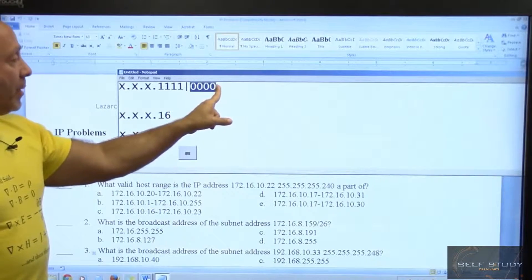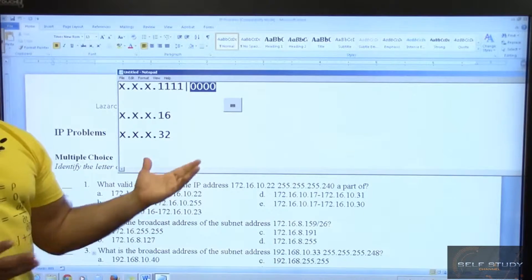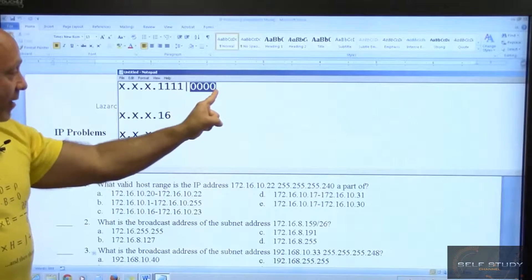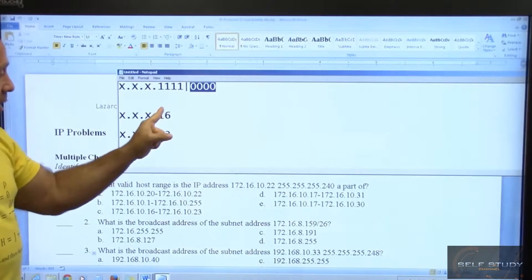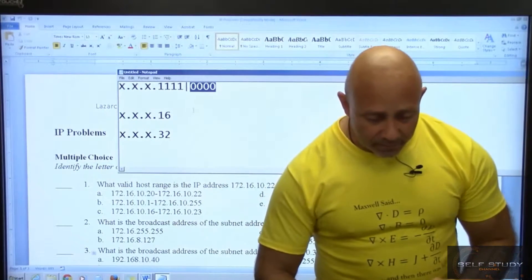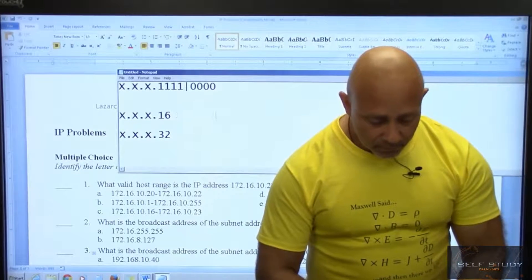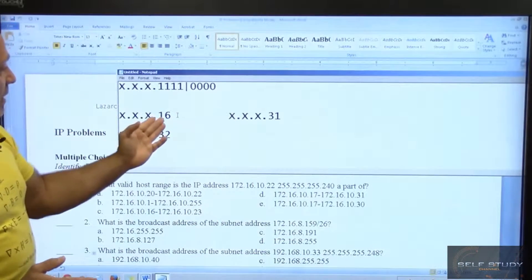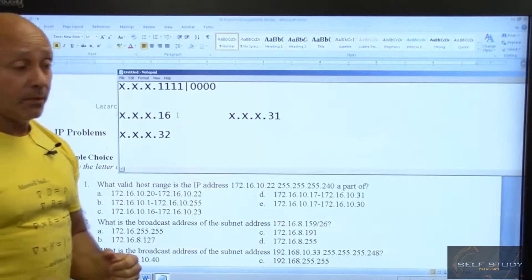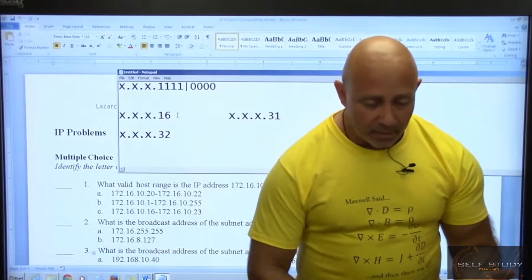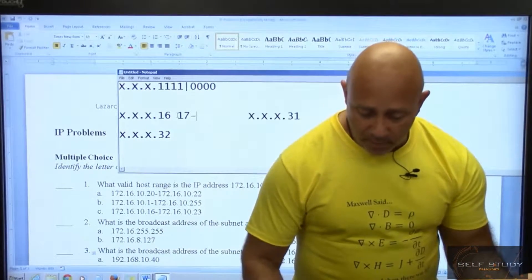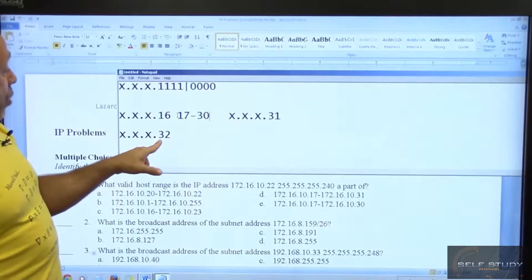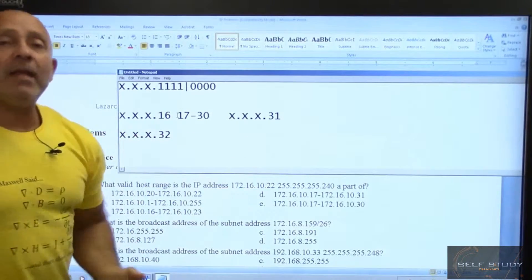They're asking for the valid host range, so what do I do? I sum up these bits right there, which is always one less than the increment, the network increment. So it's 15. That summation, that addition, 15 plus 16 is 31. So X.X.X.31. So what's in between 16 and 31? 17 and 30. After 16 we have 17, before 31 we have 30. There you go.